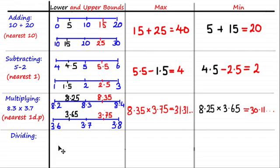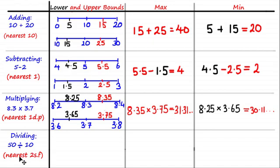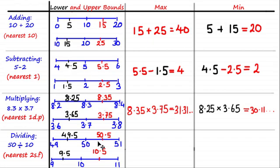Lastly, let's look at finding the max and min when dividing rounded numbers. Here we have 50 divided by 10, and both numbers have been rounded to the nearest two significant figures. Using that degree of accuracy, the upper bound of 50 is 50.5, the lower bound is 49.5, the upper bound of 10 is 10.5, and the lower bound is 9.5.